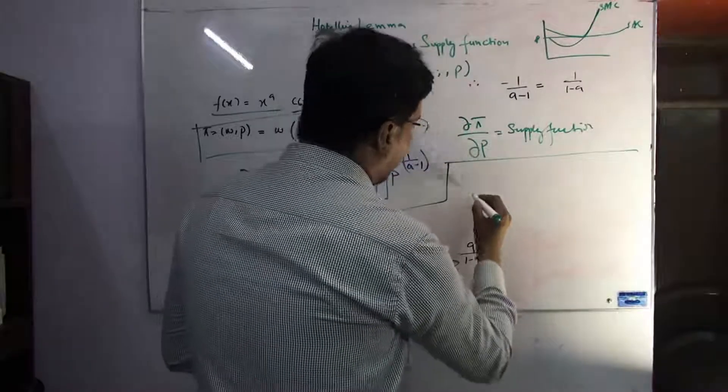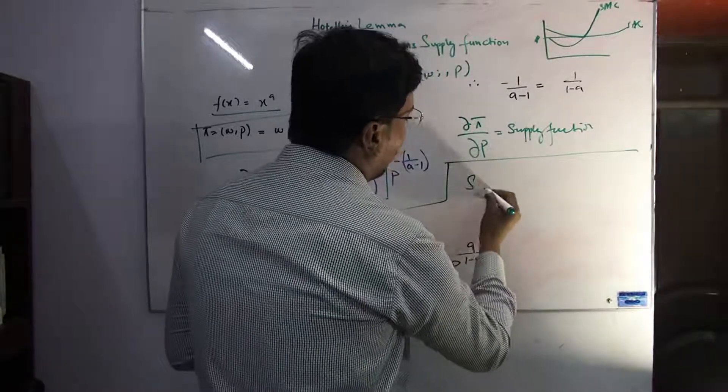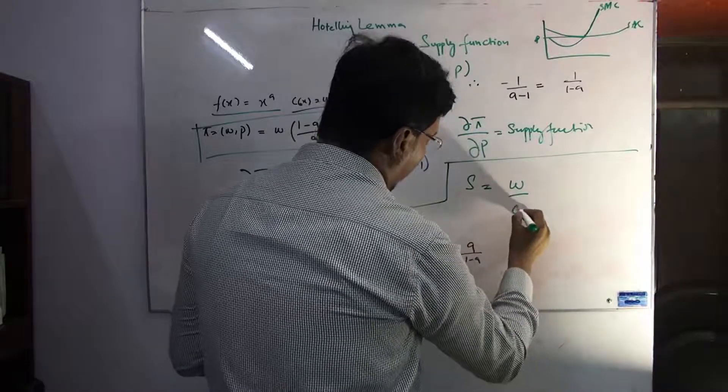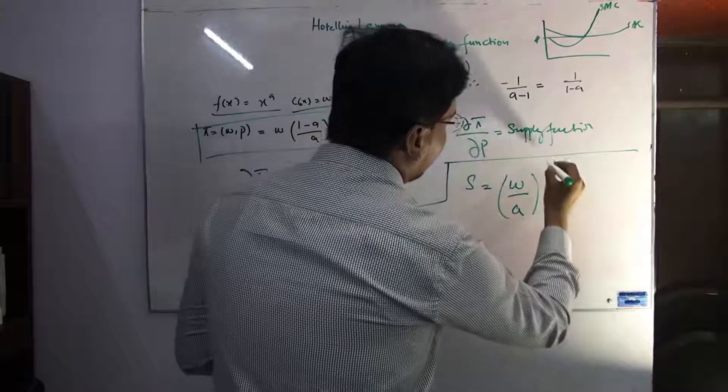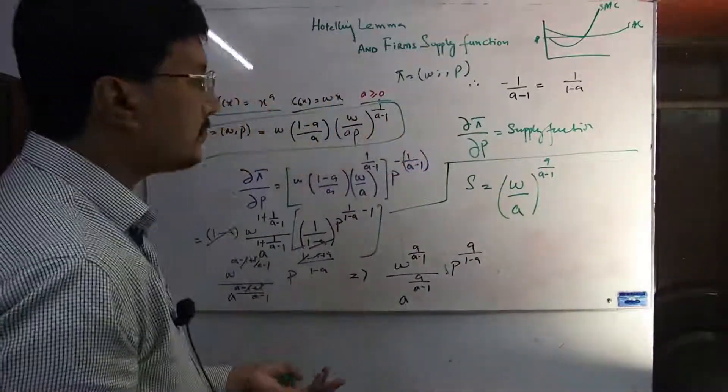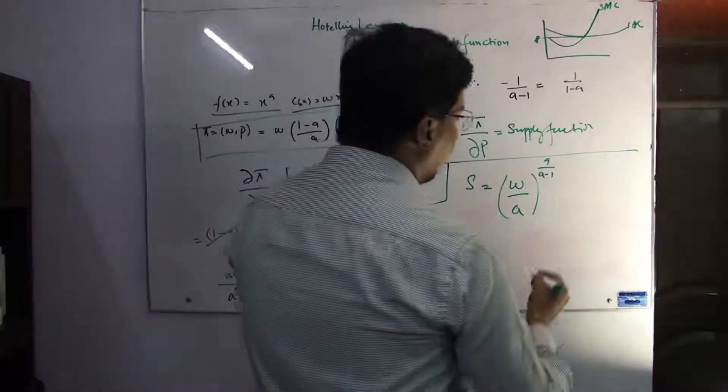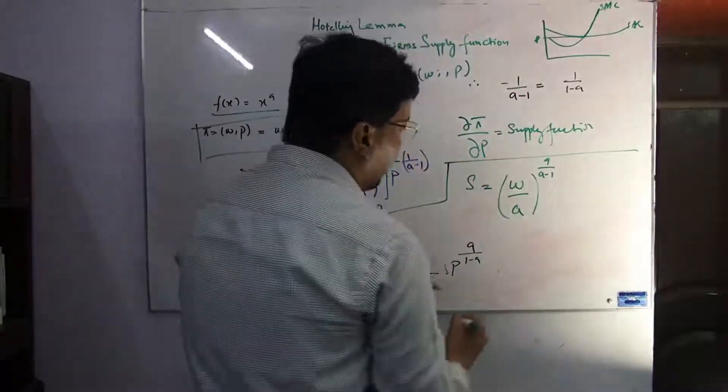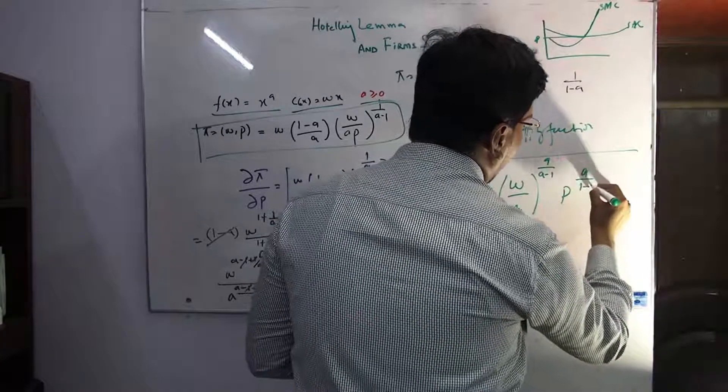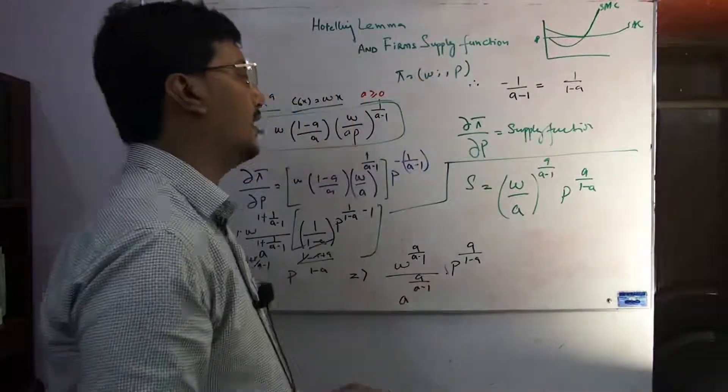Now let's see the final supply function we're going to get. The firm's supply function, we'll call it S. What are we getting? w/a, both have the same power, a/(a-1). Now see, p's power is a/(a-1). So this is the firm supply function.